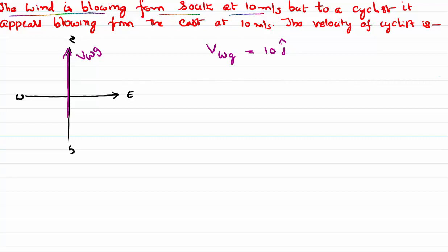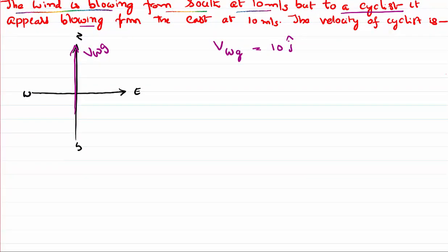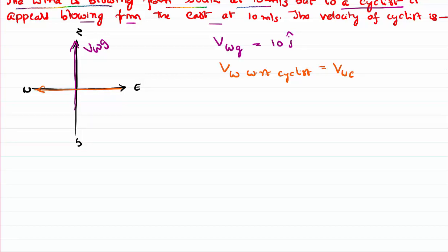Now, for the cyclist, the wind appears to be blowing from east. This means it appears to be moving from east to west. Be careful — this is not the actual velocity of the wind; this is how the wind appears with respect to the cyclist. So the velocity of the wind with respect to the cyclist is directed toward the negative x-axis, represented as -10i cap.